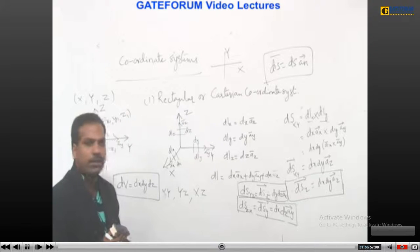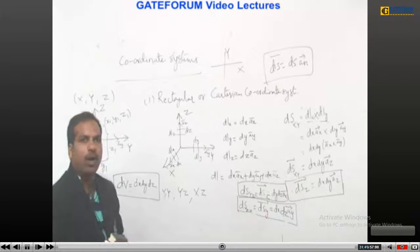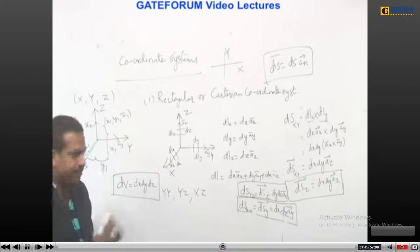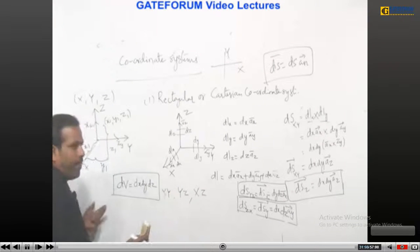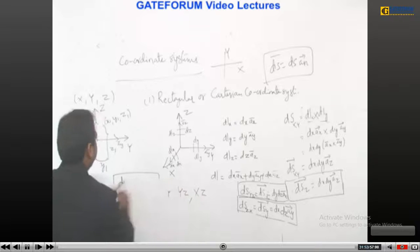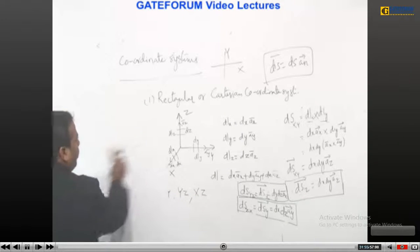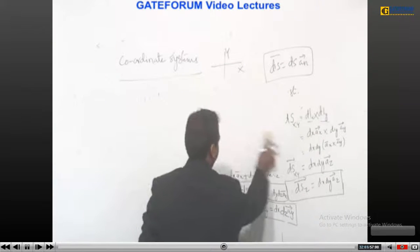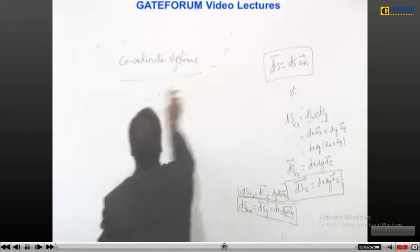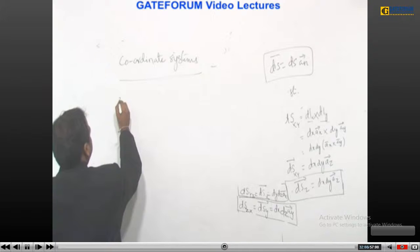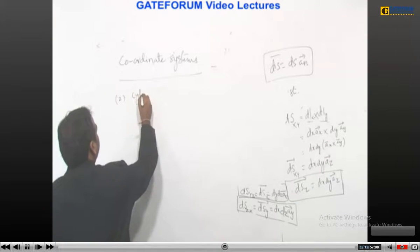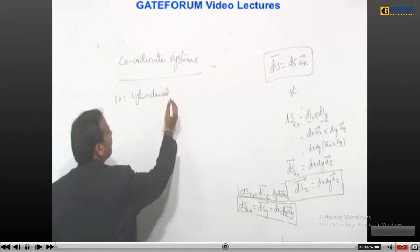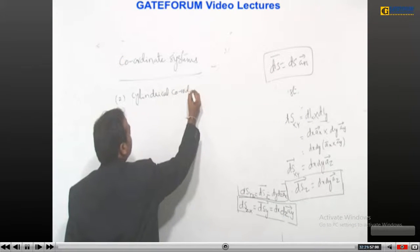Next, we move to another important coordinate system: the polar or cylindrical coordinate system. This is the second coordinate system — the cylindrical coordinate system, also called the polar coordinate system.